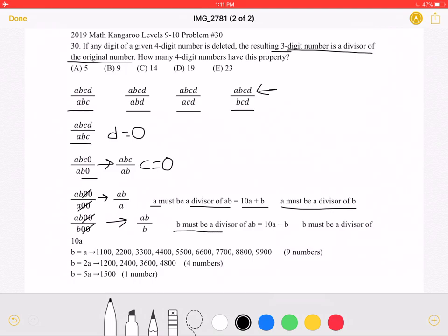B must be a divisor of AB. And again, we can write AB as being 10A plus B, which means that B must be a divisor of 10A.